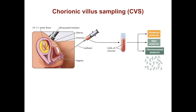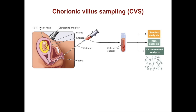The chorionic villus can also be sampled — this is called CVS. It takes cells of the chorion and does a similar type of analysis, looking at different chemicals useful for detecting diseases such as Tay-Sachs. You can analyze the DNA and do chromosomal spreads to look at the karyotype of the baby, just like amniocentesis. It's done during the 10th and 11th week of pregnancy and is a direct sampling of the outer layer of the placenta. You have to be careful: if performed too early, it can cause limb defects.